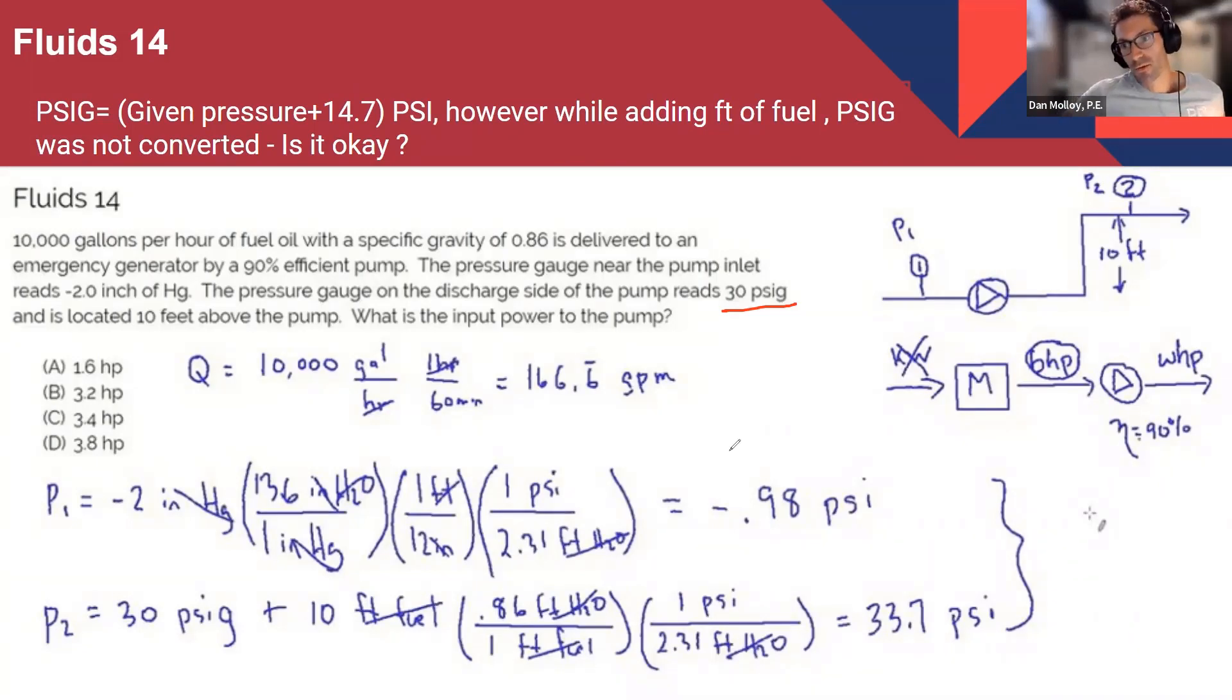So when we add 14.7 to the gauge pressure, what are we calculating? Help them in the chat if anyone knows it. Absolute pressure? The absolute pressure. That's exactly right.